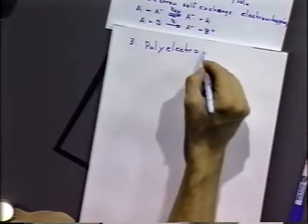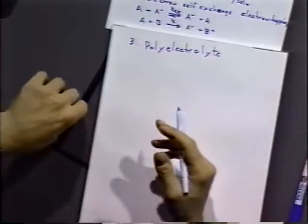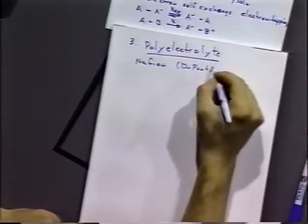A third type is referred to as polyelectrolyte films. These films act as solid electrolytic solutions — the materials stay in there because they are electrostatically attracted to the film material and because they don't tend to diffuse very rapidly in a solid polymer matrix. A very common polyelectrolyte is a material called Nafion, made by DuPont.